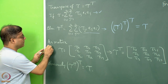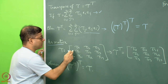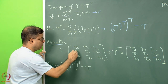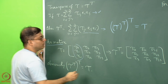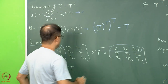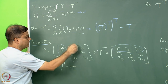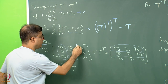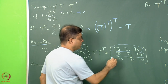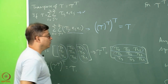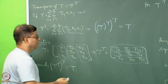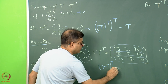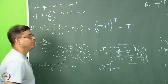In matrix form, tau has elements tau_11, tau_12, tau_13 in the first row; tau_21, tau_22, tau_23 in the second; and tau_31, tau_32, tau_33 in the third. Its transpose is formed by making each column into a row: the first column tau_11, tau_21, tau_31 becomes the first row; the second column tau_12, tau_22, tau_32 becomes the second row; and the third column tau_13, tau_23, tau_33 becomes the third row. Clearly, transposing twice returns to the original matrix.